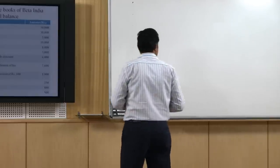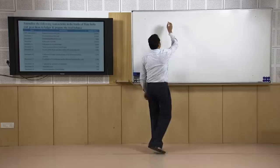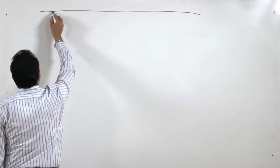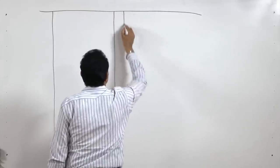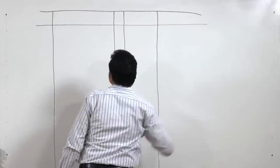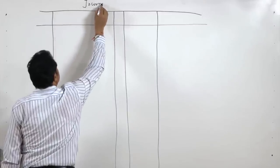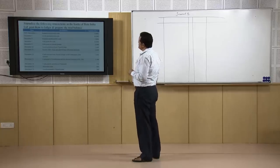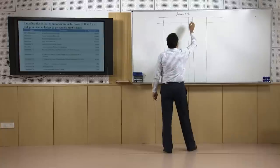Now I will show you how to prepare the first or original book of accounts, called the journal. Journal has a pro forma like this. It is a statement. You will write here 'Journal of Beta India.' This company — the question says to journalize the following transactions in the books of Beta India Limited, post them into ledger, and prepare the trial balance. So this is a journal of Beta India Limited.